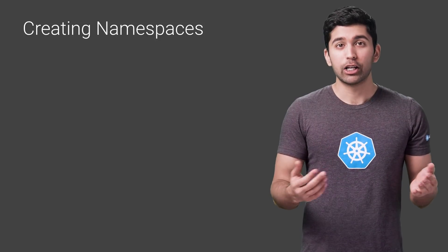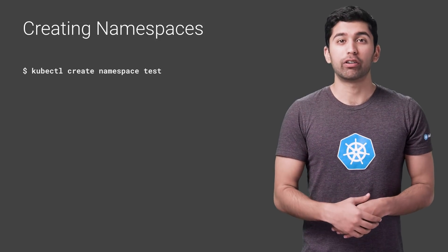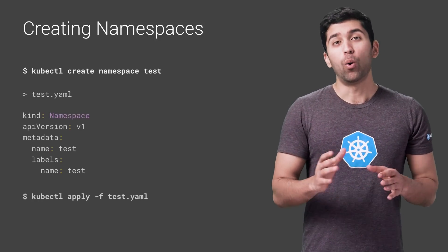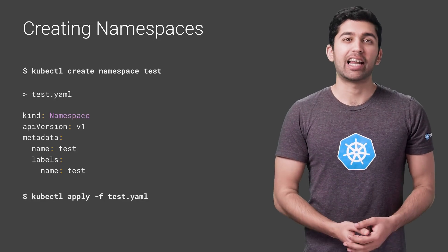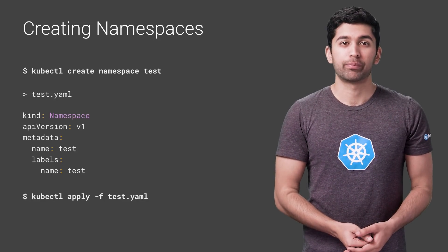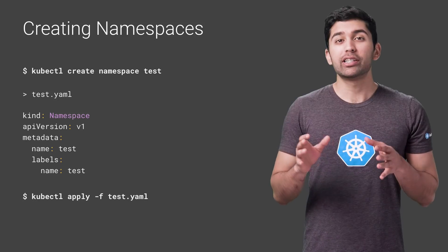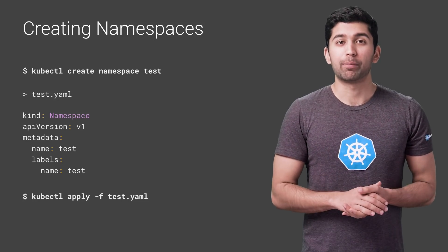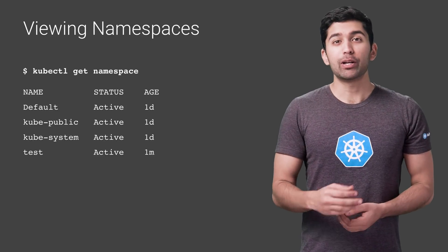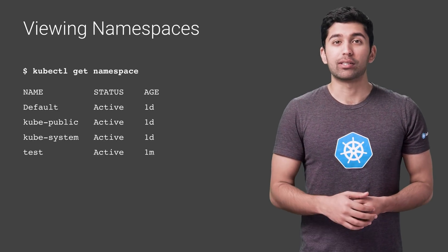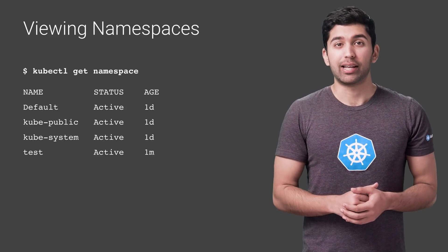Creating a namespace can be done with a single command. If you want to create a namespace called test, you would run kubectl create namespace test. Or you could create a YAML file and apply it just like any other Kubernetes resource. You can see all the namespaces with the following command: kubectl get namespace. You can see the three built-in namespaces as well as the new namespace called test.